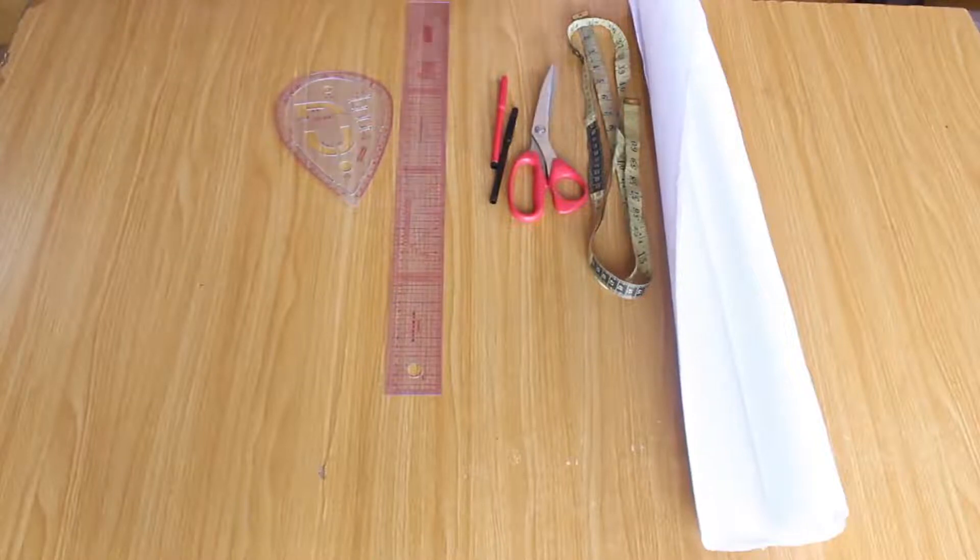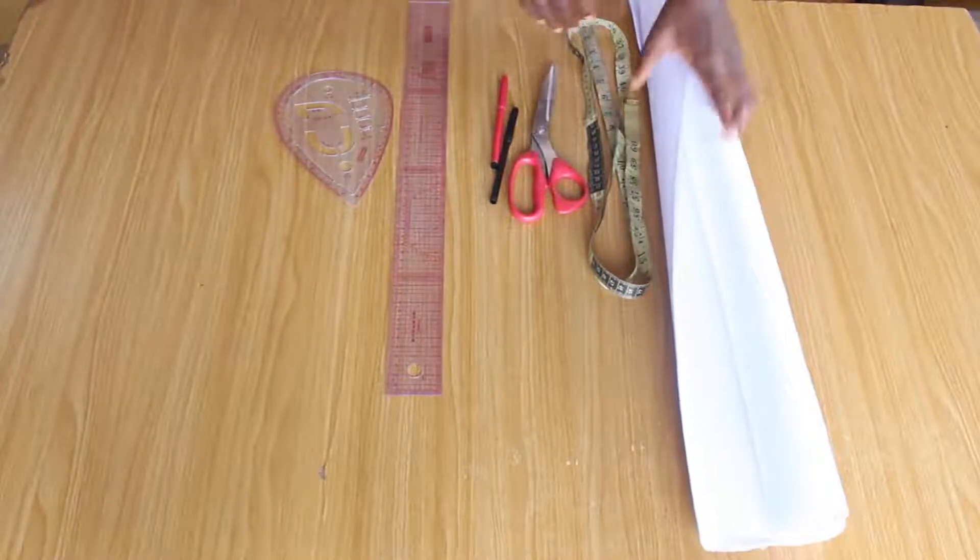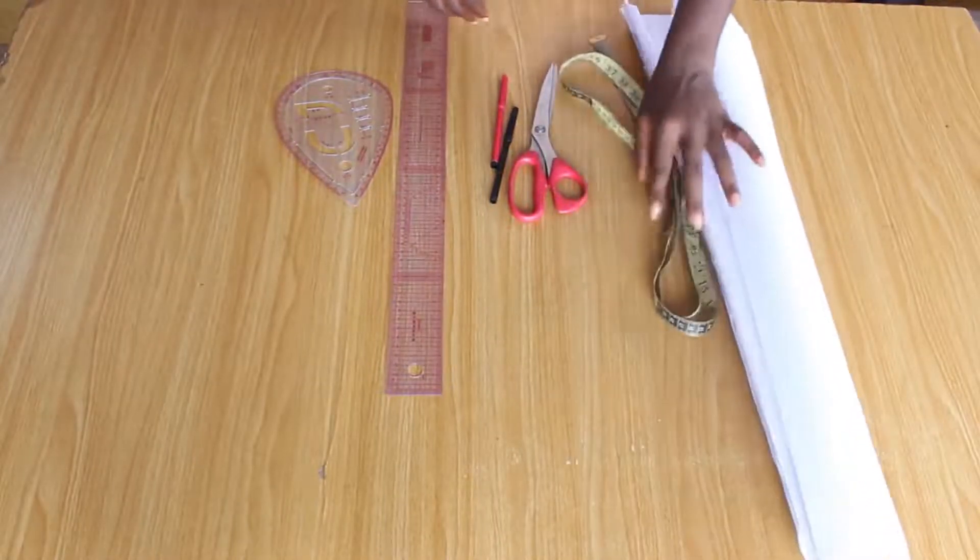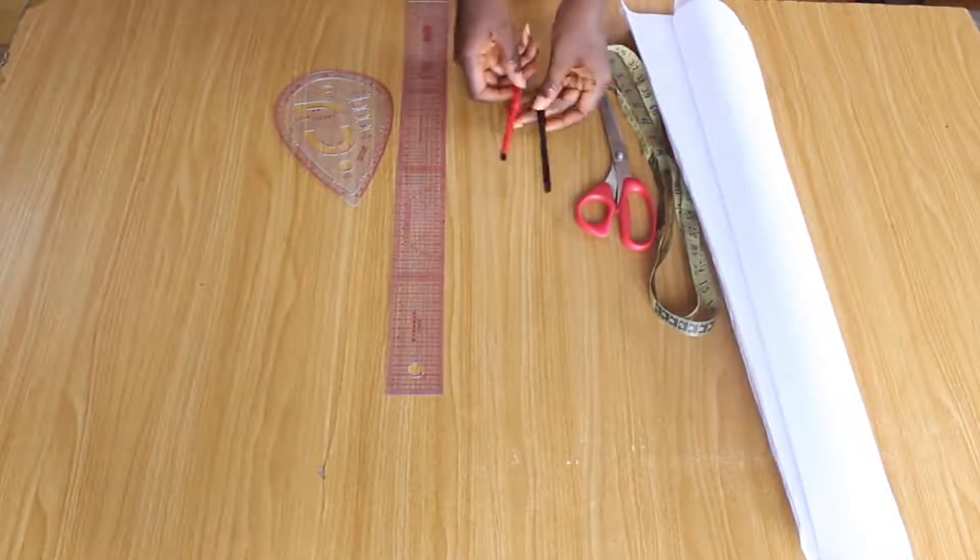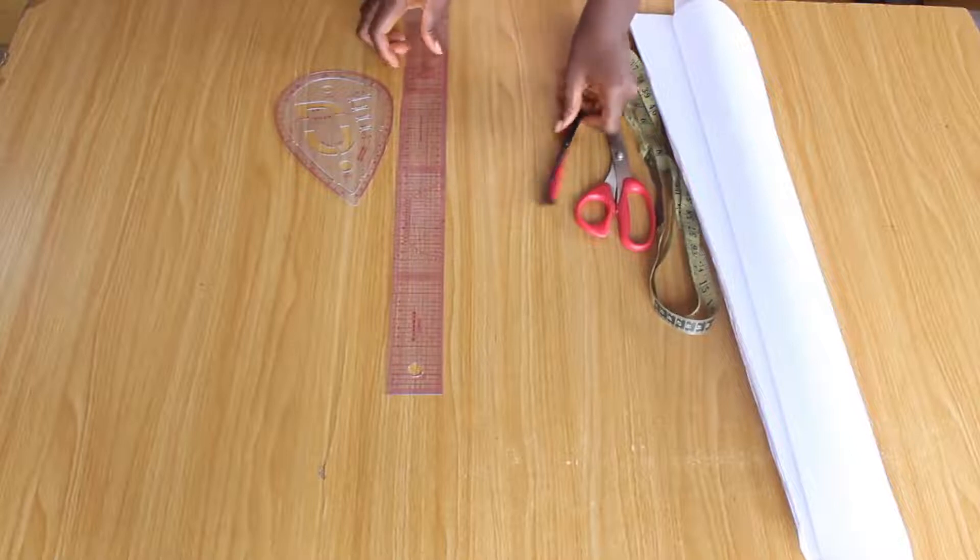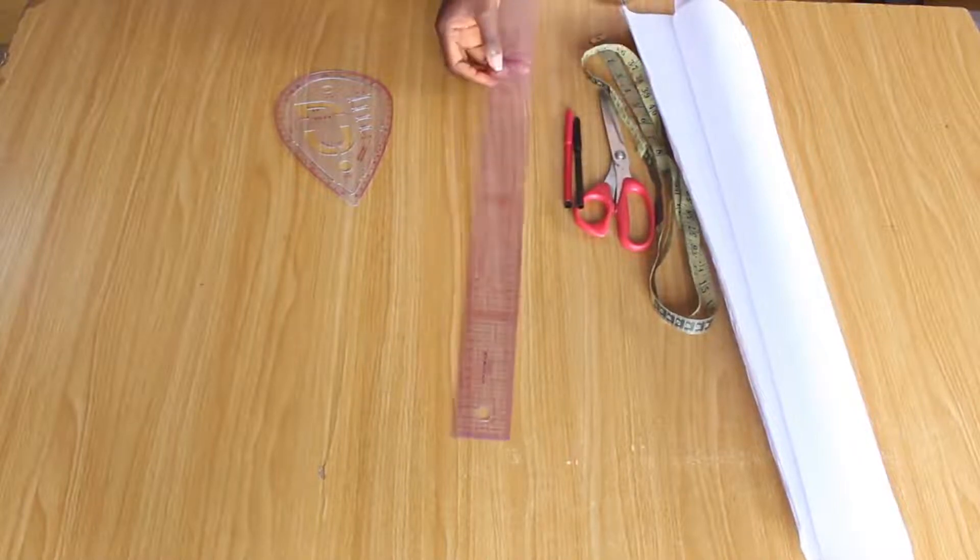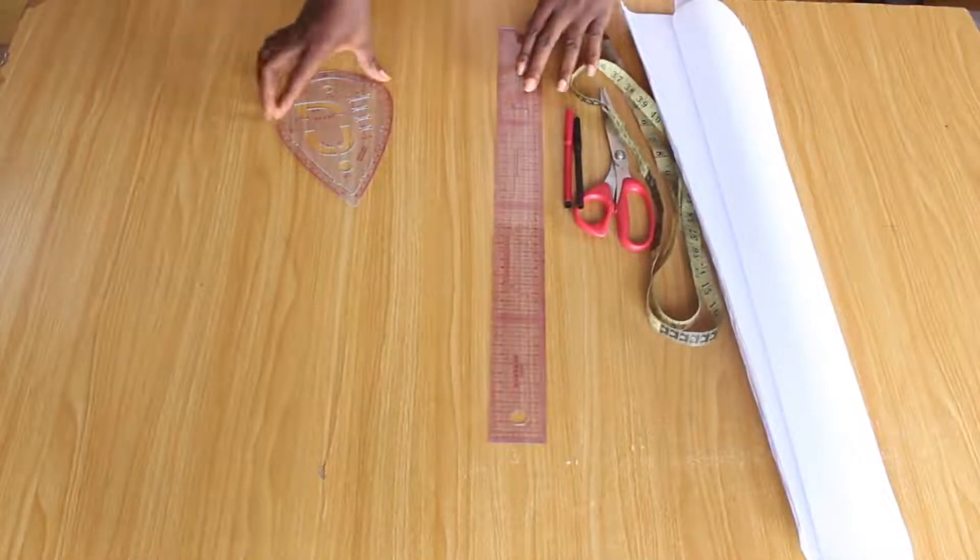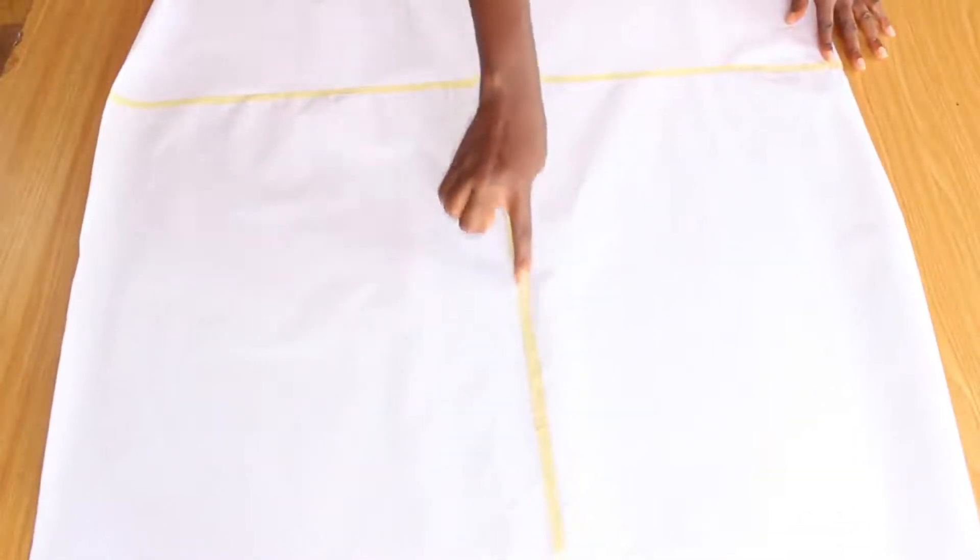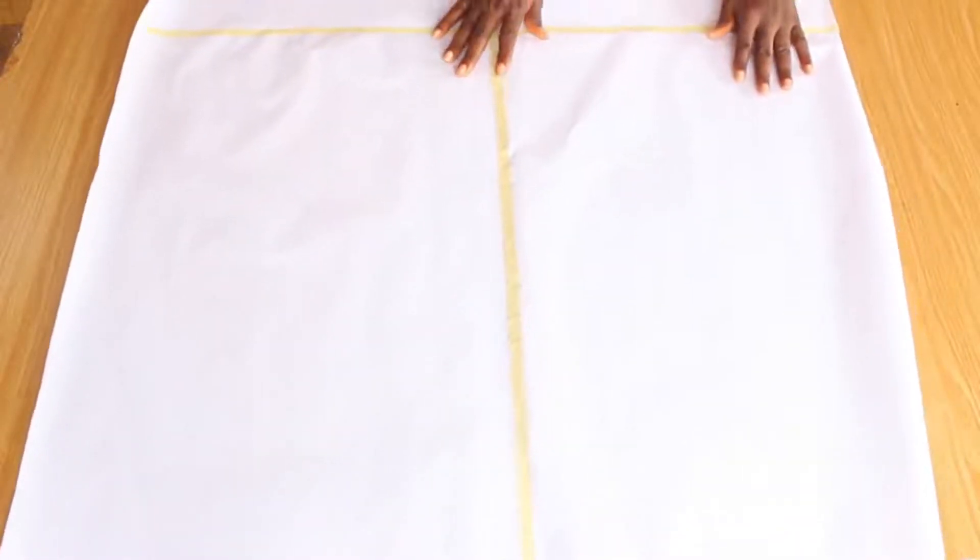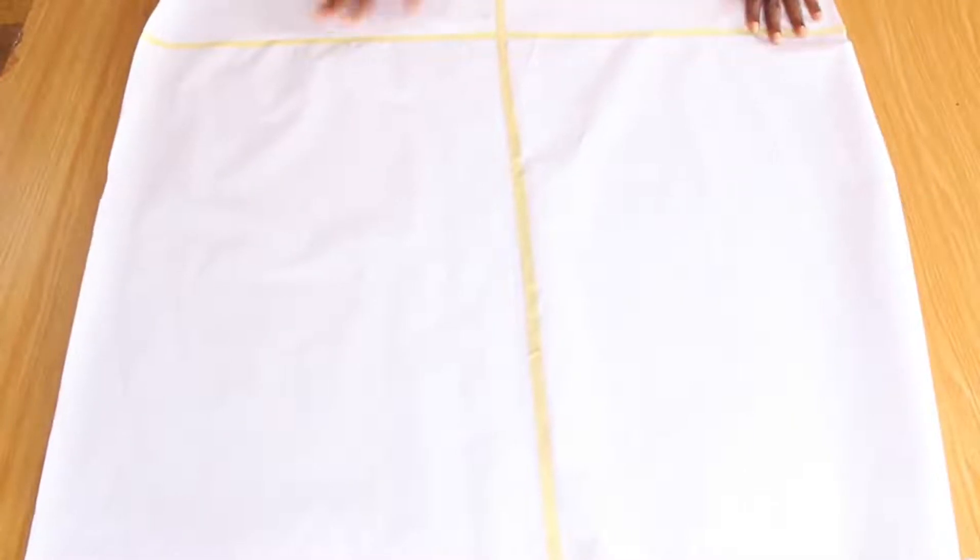For this tutorial we're going to need our pattern paper, tape measure, pair of scissors, two pen markers, a straight ruler, and a curved ruler. This is the paper we're going to be using. I had to join it at some junctions because I need a wider paper, so please ignore this.